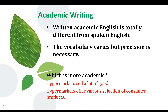Written academic English is very different from spoken English. In spoken English we can be a bit informal — for example, 'the hypermarket sells a lot of goods.' A more formal academic way to write this would be: 'Hypermarkets often offer a various selection of consumer products.' You can see there is a very huge difference between how these two sentences are written — one is very formal, the other is informal.